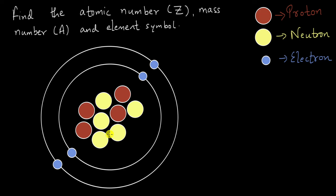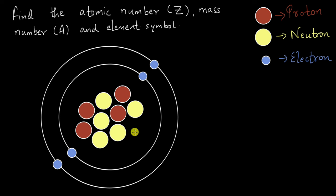We are shown here the representation of an atom of a certain element. These red circles are representing the protons, these yellow circles are representing the neutrons, and these blue circles which are rotating about the center are representing the electrons. This picture is in no way to scale. The nucleus which contains these protons and neutrons is actually very tiny compared to the size of the entire atom, but for this problem, just so that we can count how many protons and neutrons there are, we have drawn them in this way.